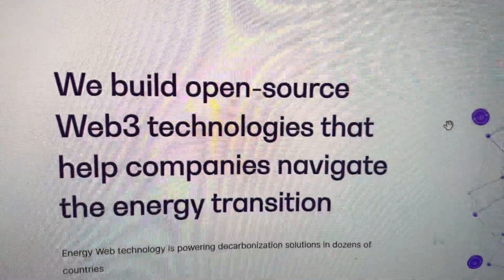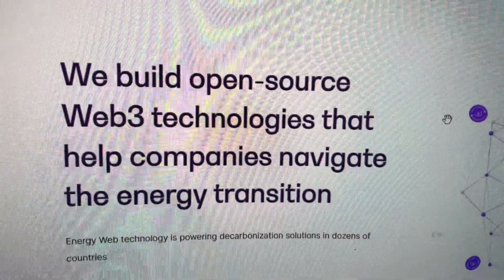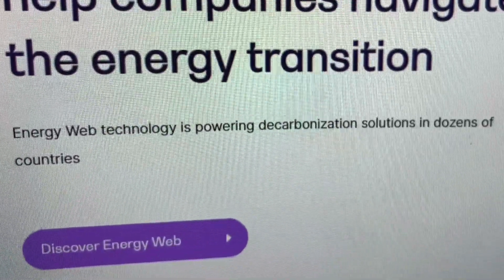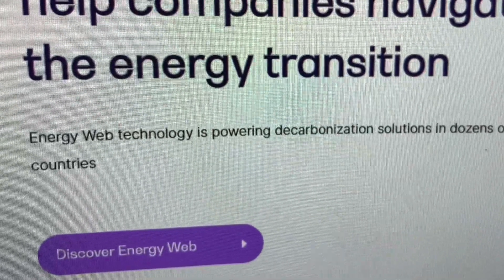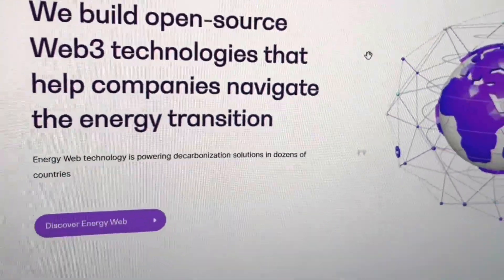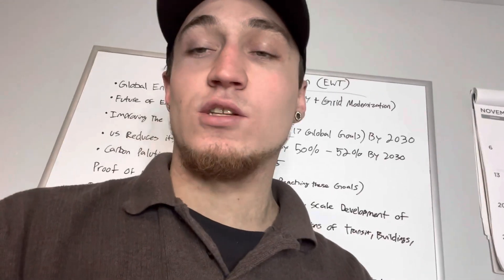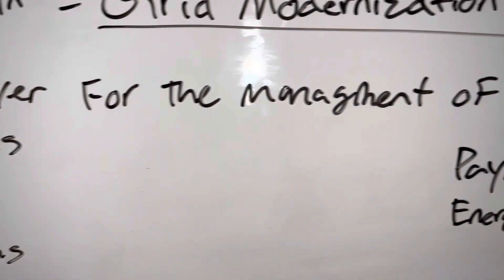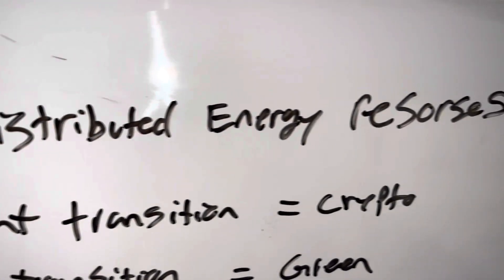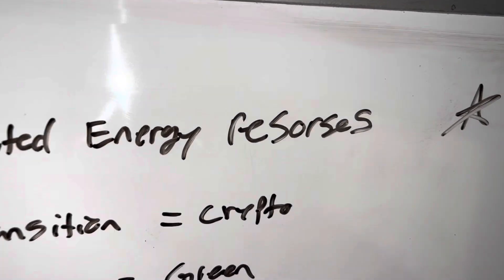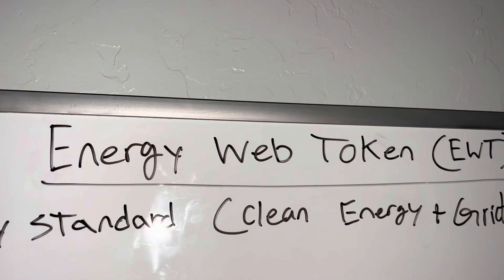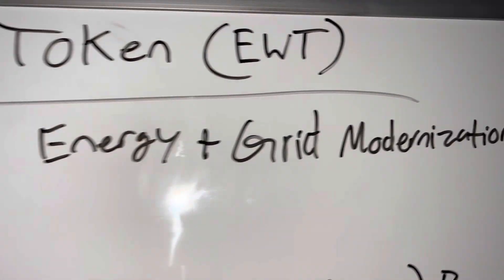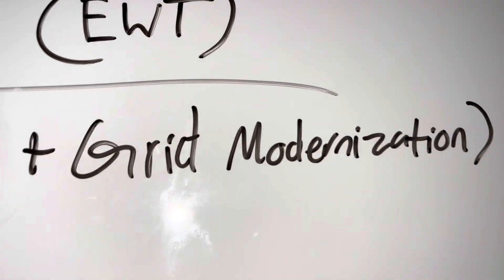That is where Energy Web Token comes in. Energy Web builds open source Web3 technologies that help companies navigate the energy transition. Energy Web technology is powering decarbonization solutions in dozens of countries — this is a global solution. Energy Web Token creates a base layer for the management of distributed energy resources. It is the global energy standard: clean energy plus grid modernization.